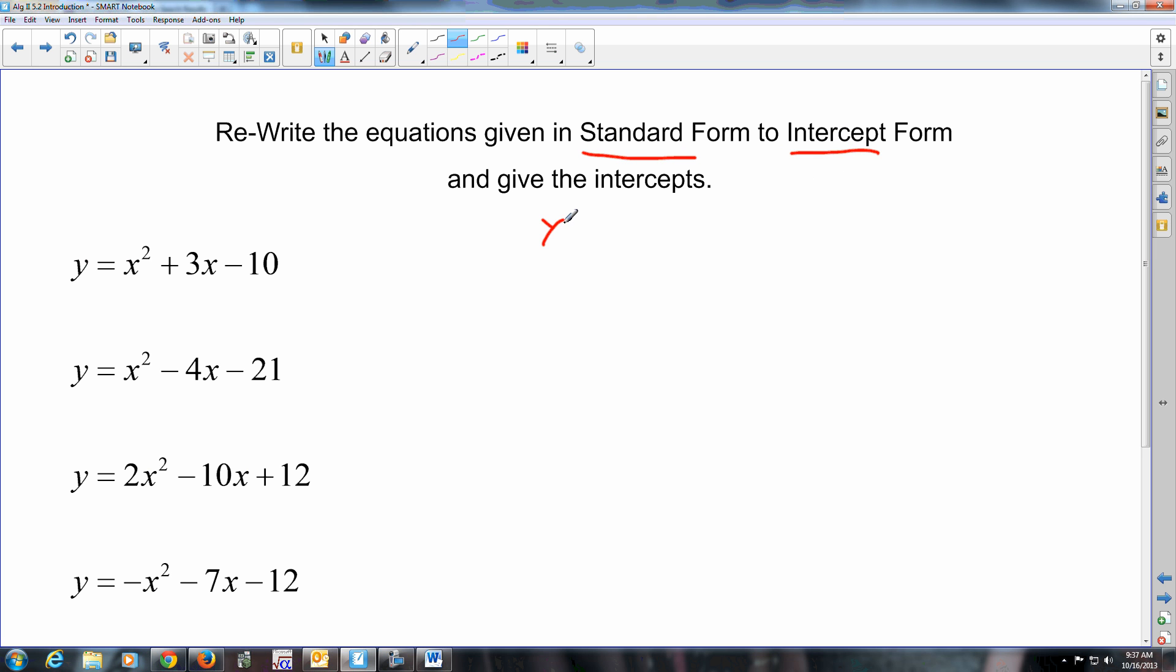Here they're looking for you to rewrite stuff given in standard form into intercept form. Standard form was y equals ax squared plus bx plus c. Intercept form was a times x minus p times x minus q. All they're doing is just saying factor it. So to rewrite it, y equals x plus 5 times x minus 2. Now give the intercepts: negative 5, positive 2. And they're not coordinates, you don't write parentheses around them. Those are the intercepts.